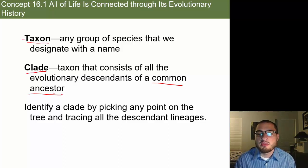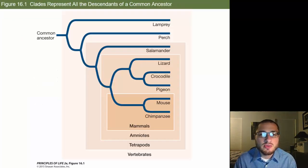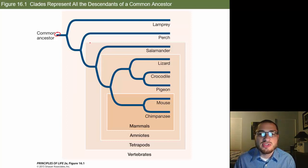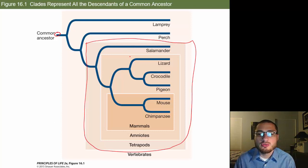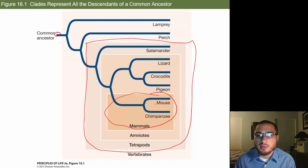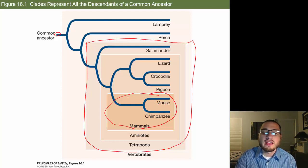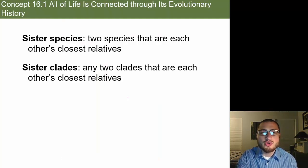You identify a clade by picking any point on the tree and tracing all the descendant lineages. For example, we have our root — our common ancestor — and we can come up with taxons such as all vertebrates. But we might want to look more closely at a clade of mammals, where we're looking at chimpanzees and other apes, as well as mice and other mammals that are part of that group. You also have sister species, which are two species that are each other's closest relatives.